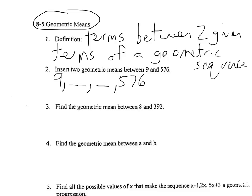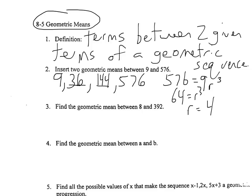So 576 equals 9 times r to the n minus 1. With n equal to 4, that's r to the third. Divide both sides by 9, so 64 equals r to the third. Cube root both sides, and r equals 4. So I know the common ratio. I multiply 9 by 4 and get 36 as the first geometric mean. Multiply that by 4 and get 144 as the second. You can self-check: 144 times 4 equals 576. The sequence multiplies by 4 each time.